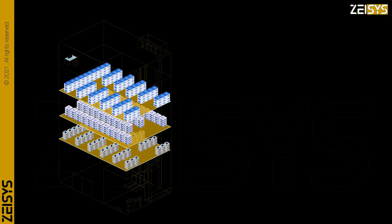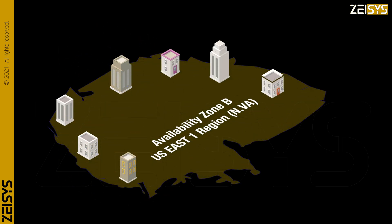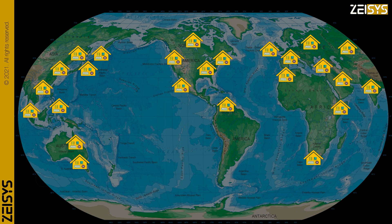To summarize, the AWS cloud is the collective capability of all the hardware in the many data centers, grouped as AZs, and geographically spread across 25 regions.